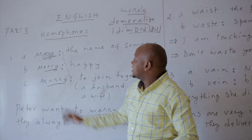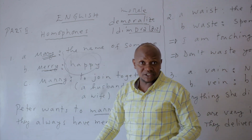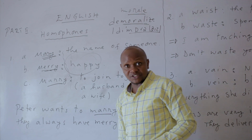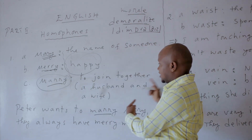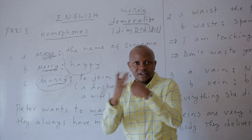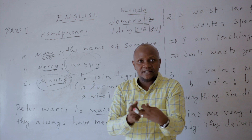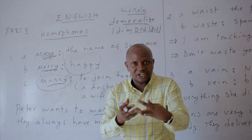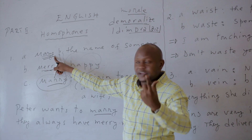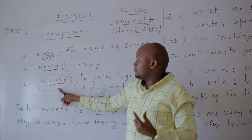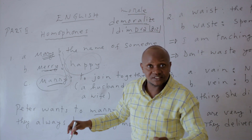Then 'Merry' means happy — like Merry Christmas, meaning Happy Christmas. Then we have 'Marry,' which means to join together — a husband and a wife. They are going to marry each other. John married Janet. That is 'to marry.' So Mary, Merry, Marry — they sound the same but have different meanings.